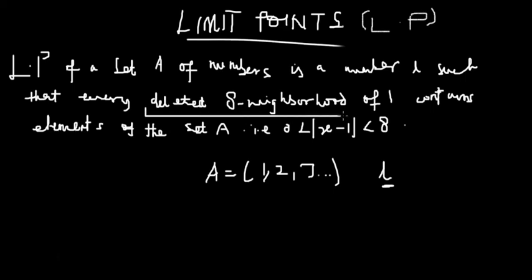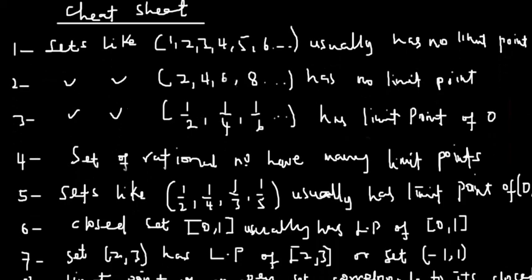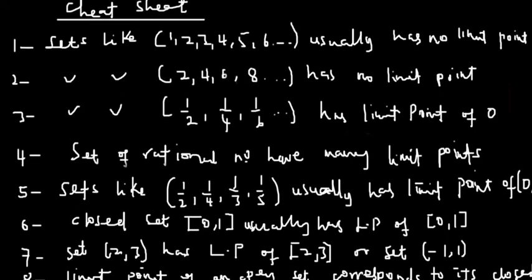To understand deleted neighborhoods, go to the Algebra 2 playlist, watch that video, then come back. Now let's dive into the cheat sheet. The first item: sets like {1, 2, 3, 4, 5, 6} — finite counting number sets — do not have limit points. Whenever you come across a question with sets like this, they do not have limit points.